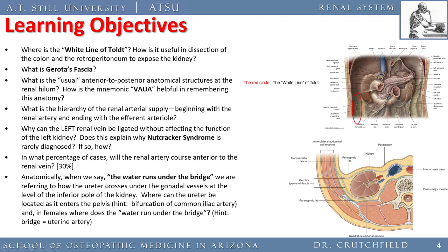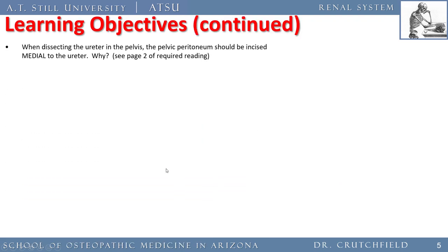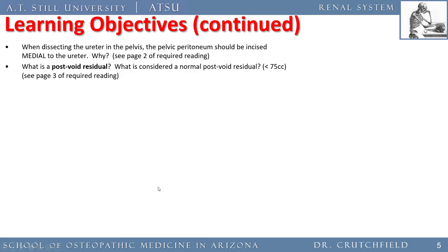When we say 'water runs under the bridge,' we're referring to how the ureter crosses under the gonadal vessels at the level of the inferior pole of the kidney. The ureter can be located where it crosses over the bifurcation of the common iliac artery into the internal and external iliac arteries — a good place to find it in the OR. In females, the ureter crosses under the uterine artery. This mnemonic helps surgeons locate and avoid injury to the ureter. When dissecting the ureter in the pelvis, the peritoneum should be incised medial to the ureter because the blood supply enters laterally.